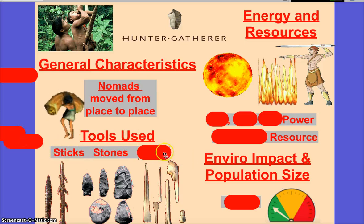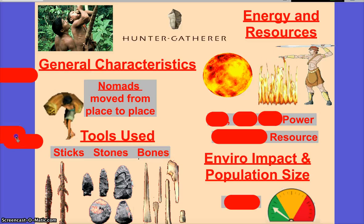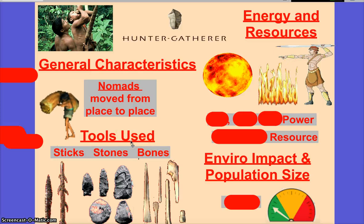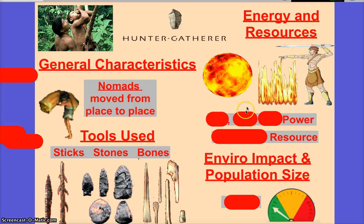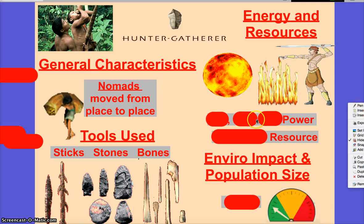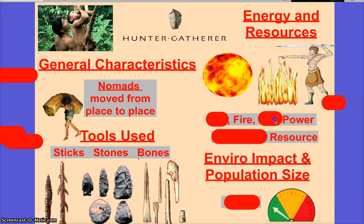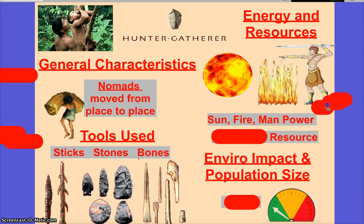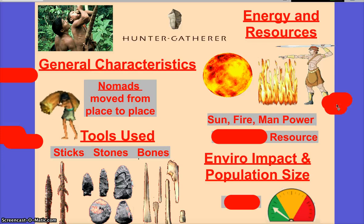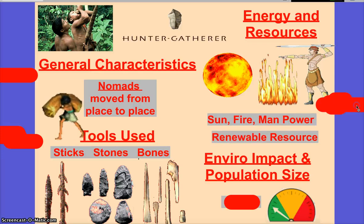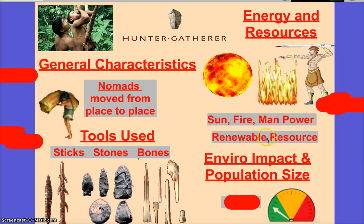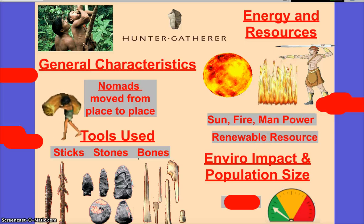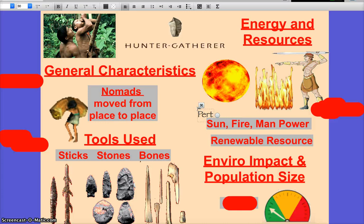Stones and bones — correct. They used anything they could get their hands on from the land as tools in order to survive. What kind of energy or resources did they use? Fire — good. They used the sun and manpower. What kind of resources are we talking about? Renewable. The sun is actually perpetual, so if you want to put perpetual slash renewable and link the word perpetual to sun, feel free to do that.